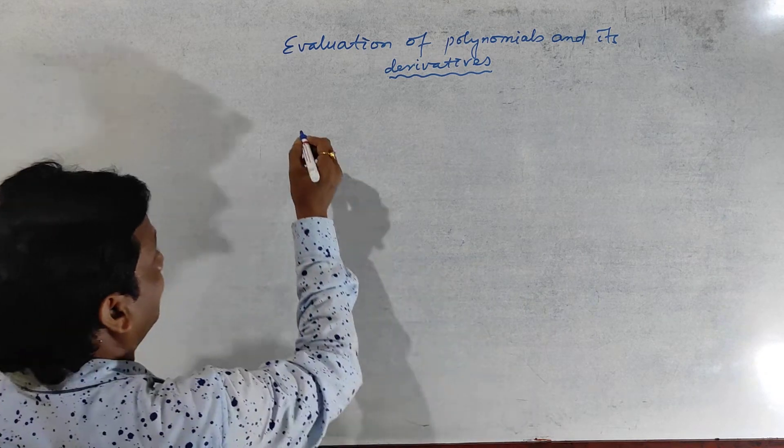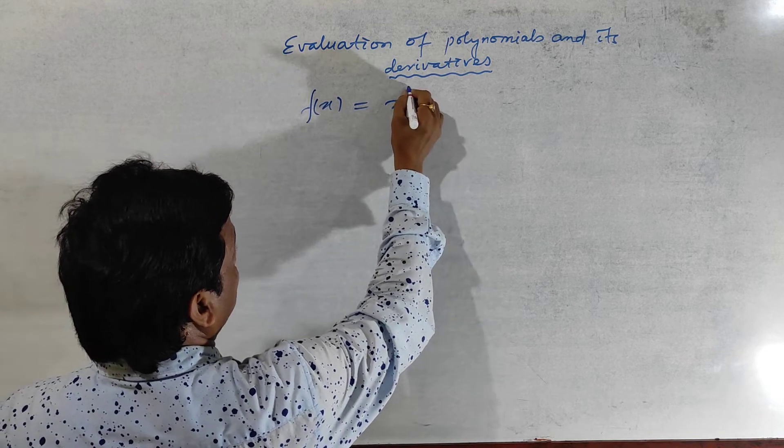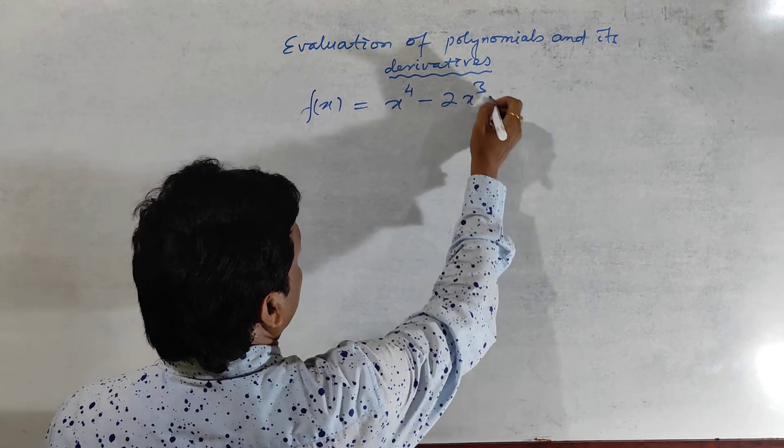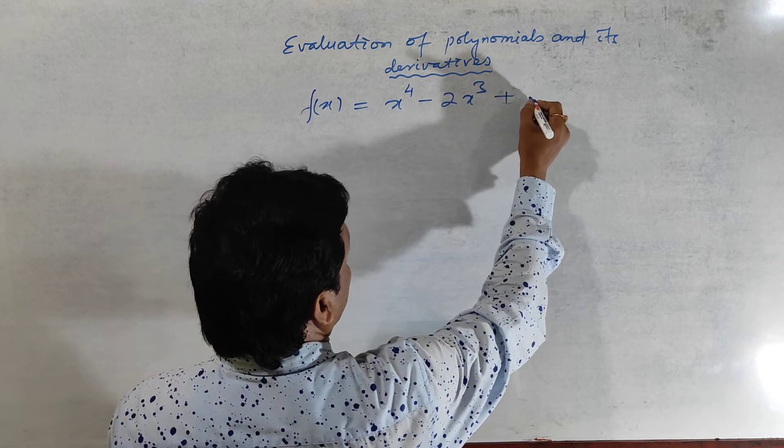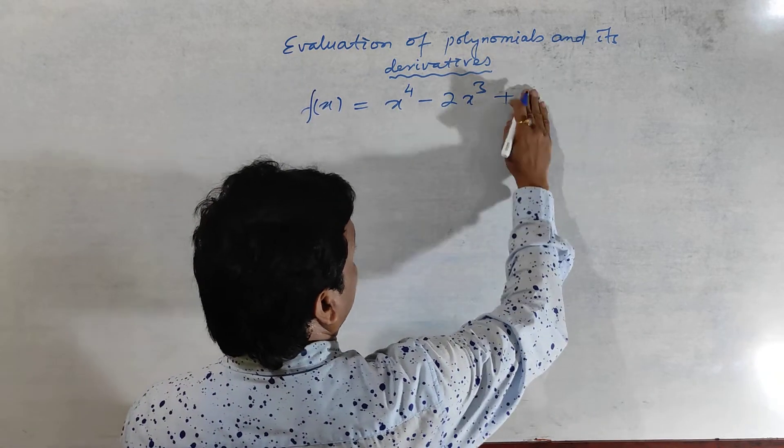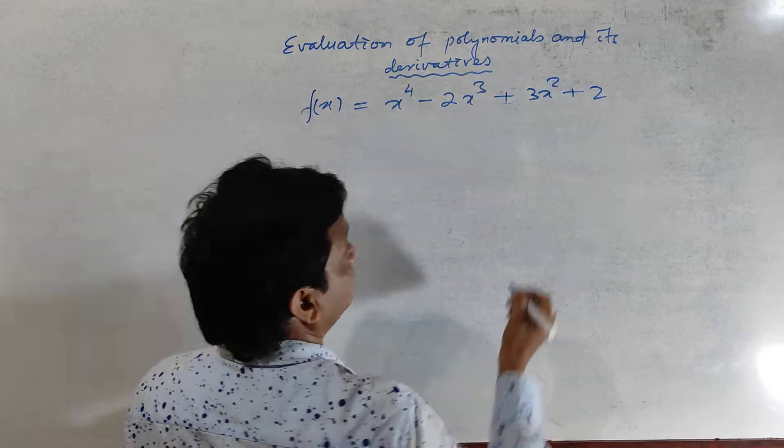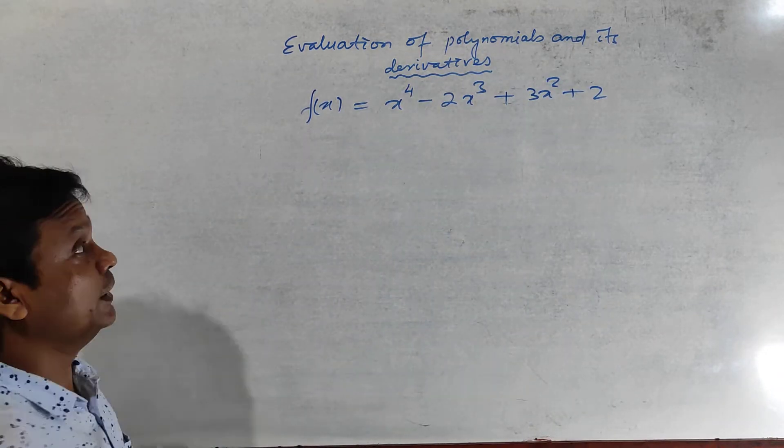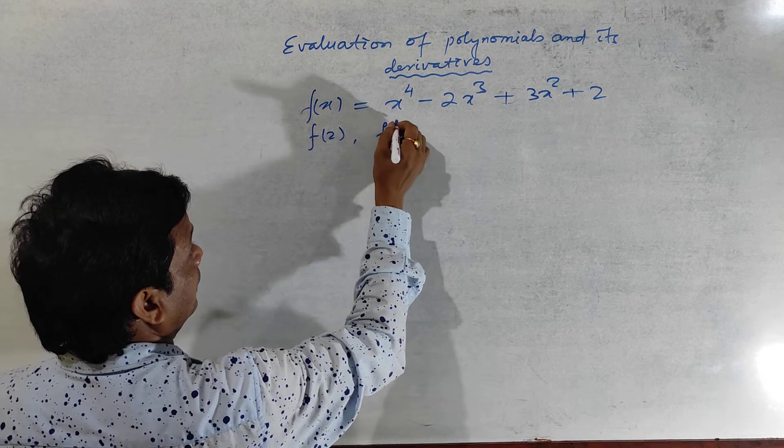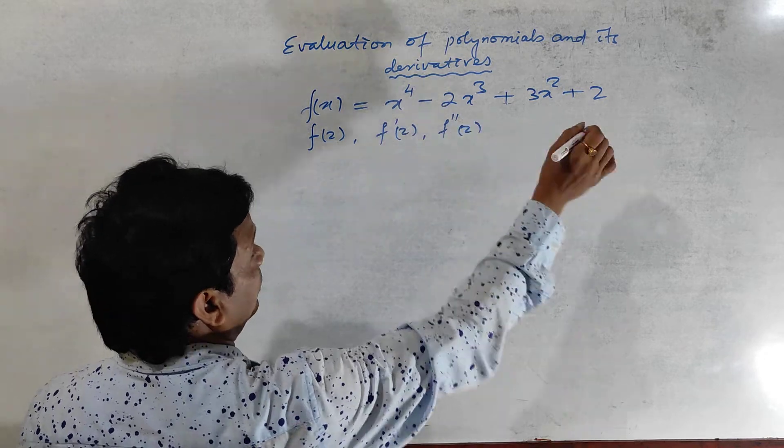See here. F of x is equal to x to the power 4 minus 2x cube plus 3x square plus 2, this one. And you have to find out f of 2, f dash 2, f double dash 2 and so on.